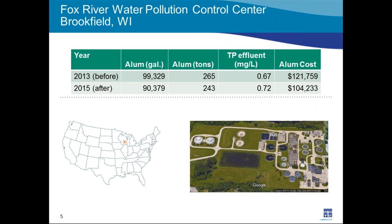The data shown are before and after installation of the P700 phosphate analyzer and its incorporation into the chemical control system. In 2013, the year before the analyzer was installed, alum usage was around 100,000 gallons to produce effluent TP of around 0.7 mg/L at a cost of about $122,000. In 2015, the first full year after installation, alum usage was reduced by 10%, still producing similar effluent quality around 0.7 mg/L, but at a much lower cost of around $104,000.